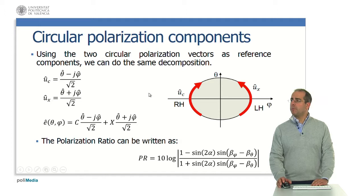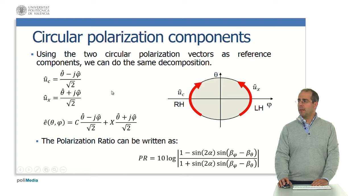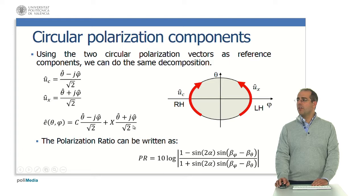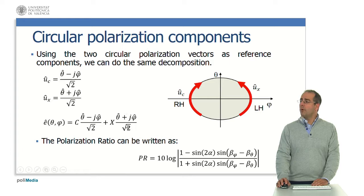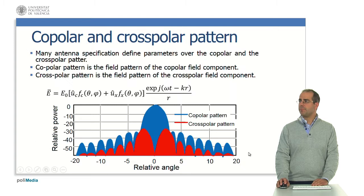Using the two circular polarization vectors as reference components, we can do the same decomposition. Here, for example, we have the copolar unit vector and the cross-polar unit vector considering right-handed circular polarization. The desired polarization is right-handed circular and the cross-polar component is left-handed circular polarization. We can also define the polarization ratio, which can be written in terms of the parameters alpha, beta-phi, and beta-theta.